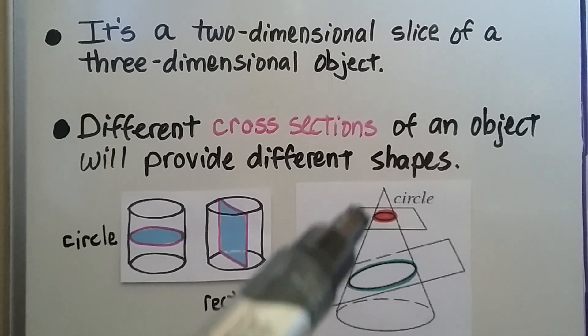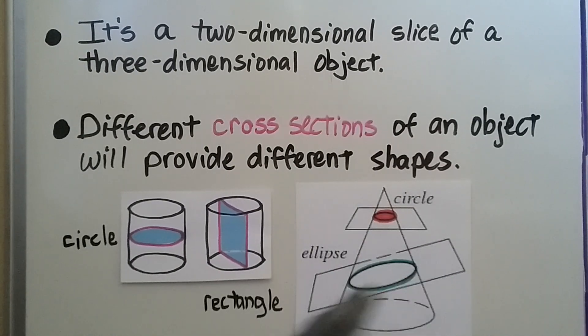And with this cone, as we said before, we'll get a circle, or if we go this way, we'll get an ellipse, an oval.